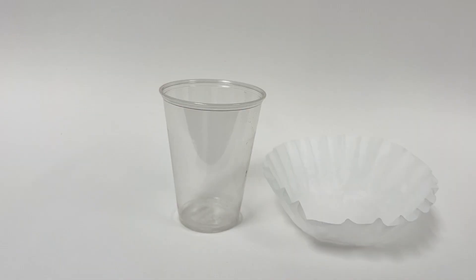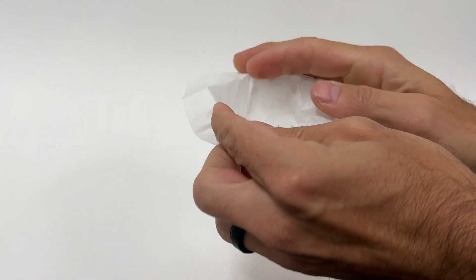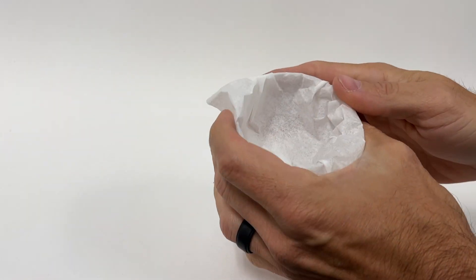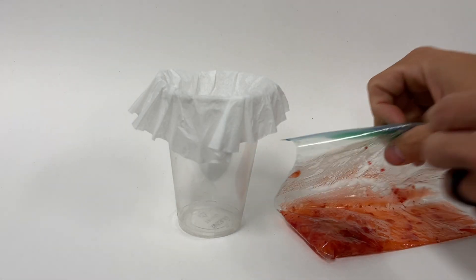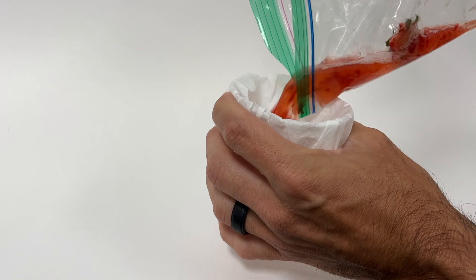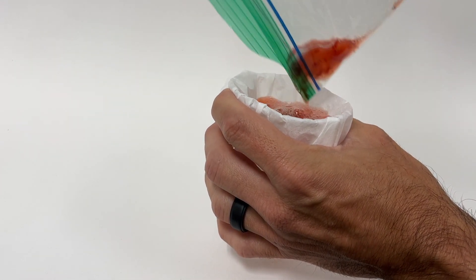Then get your plastic cup and filter. Push the filter into the top of the cup and wrap it around the outside. Pour the contents of your mashed up strawberry into the filter and be sure to hold the filter on so it doesn't fall to the bottom of the cup as you're doing this.